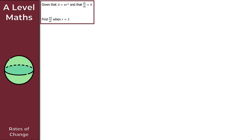For question 1, I've picked a nice easy question just to get us started. We're given that A = πr² and that dr/dt = 4. It then asks us to find dA/dt when r = 3. So we have A = πr² and dr/dt = 4, and we're looking to find dA/dt when r = 3.